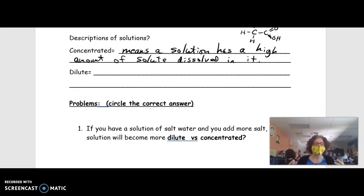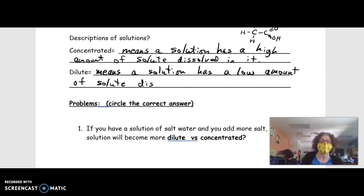What about dilute? If a solution is dilute, what does that mean? A solution has a low amount of solute. That's exactly it. It's the opposite of concentrated. So dilute means a solution has a low amount of solute dissolved in it.